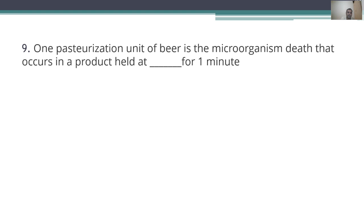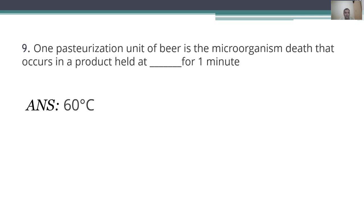Ninth question: one pasteurization unit of beer is the microorganism death that occurs in a product held at 60°C for one minute. That is defined as one pasteurization unit.